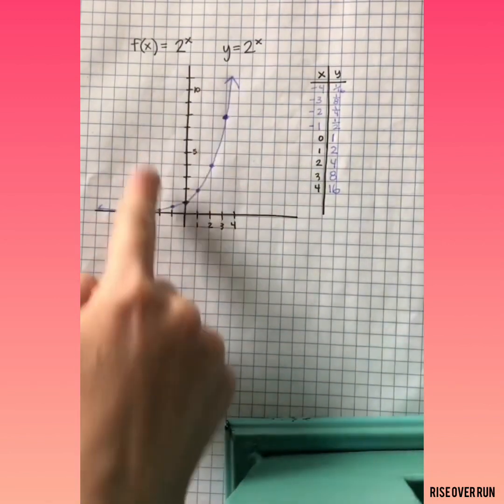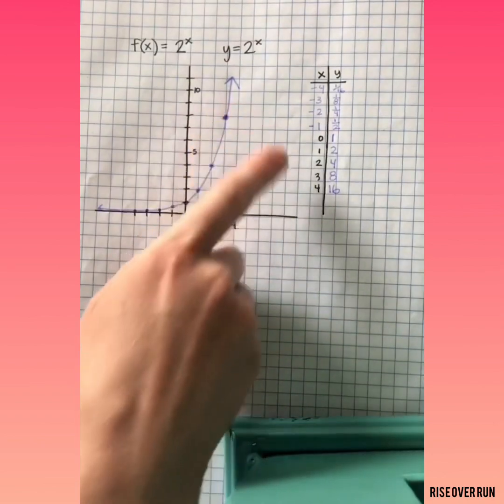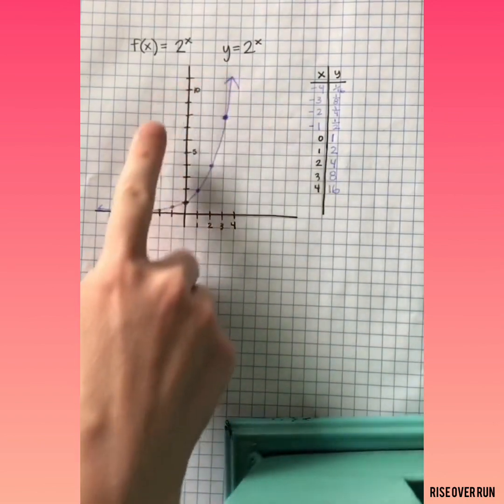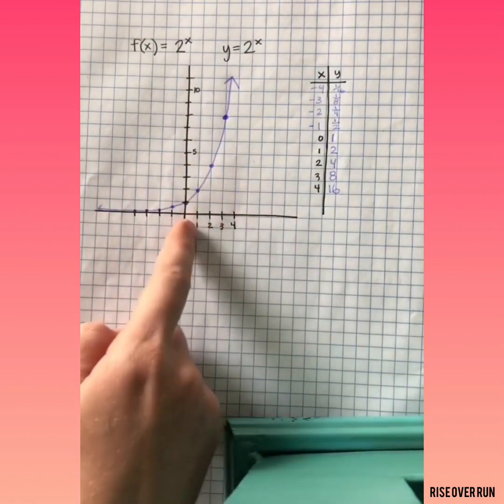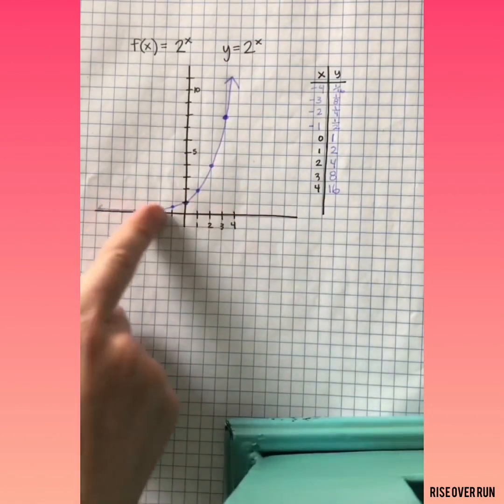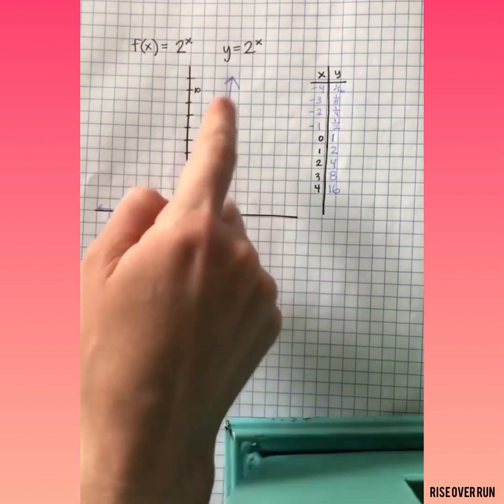Let's think about what this could represent. This is 2 multiplying over and over. So if this were representing a real-world situation, it would be something that's doubling. Maybe it's doubling every day, but it's increasing very quickly, and as time goes on, that increase will be greater and greater.